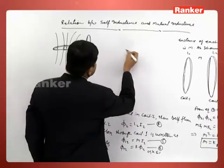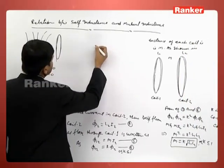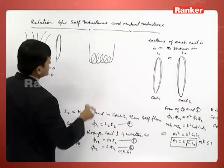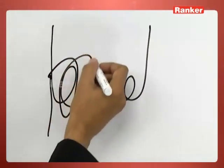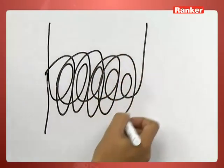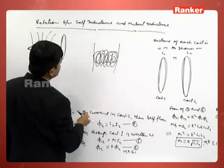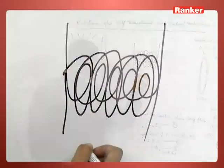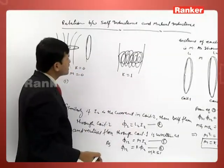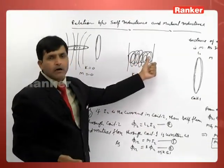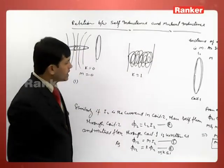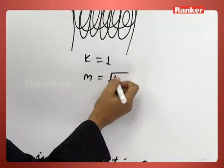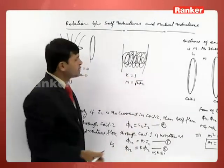In the second case, if one coil is coupled with another such that whatever flux passes through one coil, the same number of lines also pass through the other coil, then K equals 1. This means all the self-flux of one coil is associated with the other coil. So M = √(L1·L2).